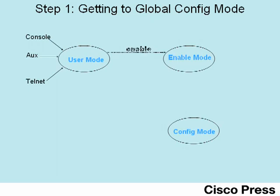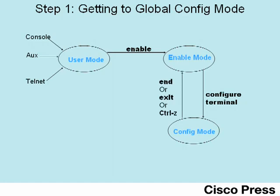Then use the enable command to reach enable or privileged mode. Then use the configure command to reach configuration mode. At that point, the user can type configuration commands that configure the router or switch. When done, they can use the end or exit command to exit configuration mode, or just press Control-Z.